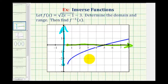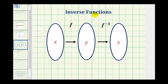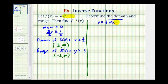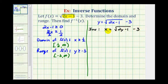Now let's find the inverse of f of x. Inverse functions undo each other: if function f has an input of x and an output of y, that y becomes the input into the inverse function, which returns the original value of x. The process is to write the function in terms of x and y, then interchange x and y. So we write y equals the square root of the quantity 2x minus 1, minus 3, and the inverse is x equals the square root of the quantity 2y minus 1, minus 3.